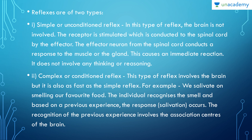Reflexes are of two types. First are simple or unconditioned reflexes. In this type the brain is not involved — the receptor is stimulated, which is conducted to the spinal cord, and the effector neuron from the spinal cord conducts a response to the muscle or gland. This causes an immediate reaction without any thinking or reasoning. However, the brain does receive a message that a simple reflex action has occurred.